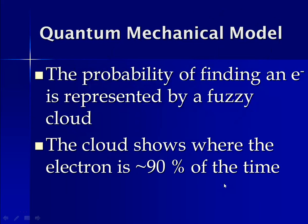The way we depict an electron is the probability of finding it, and we represent it by something called a fuzzy cloud. That cloud shows you the area where it is about 90% likely to find an electron. So about 10% of the time, it could be outside of that cloud region.